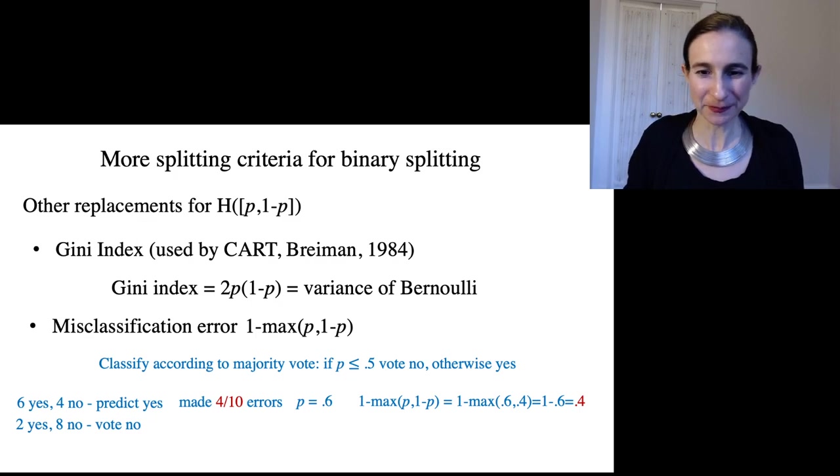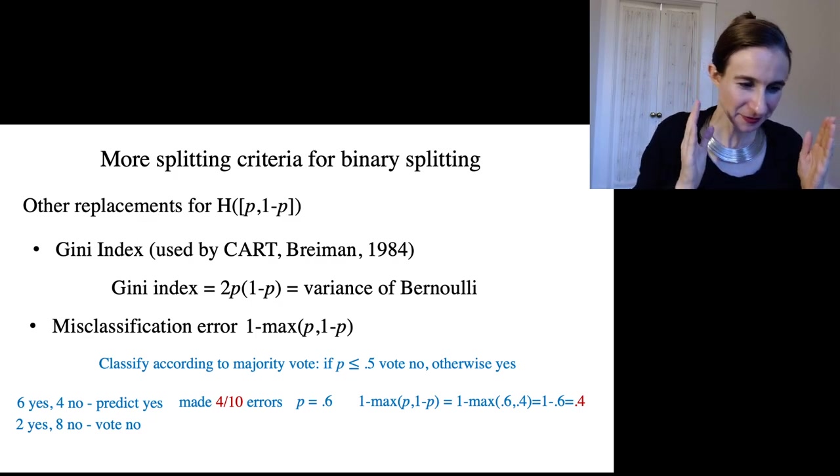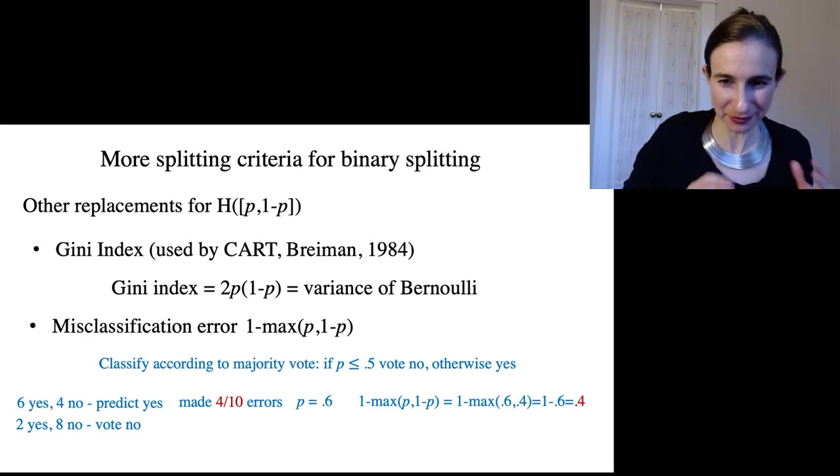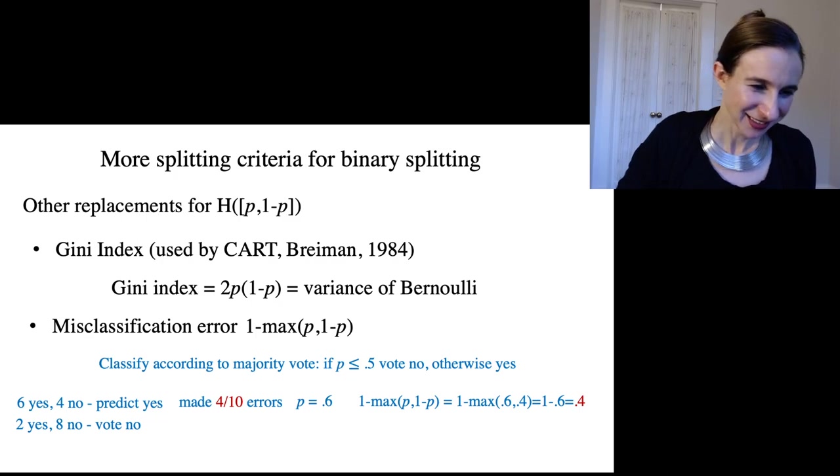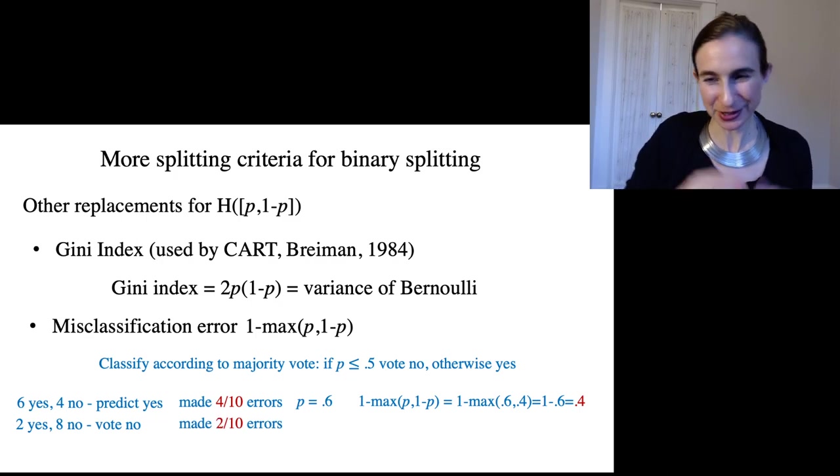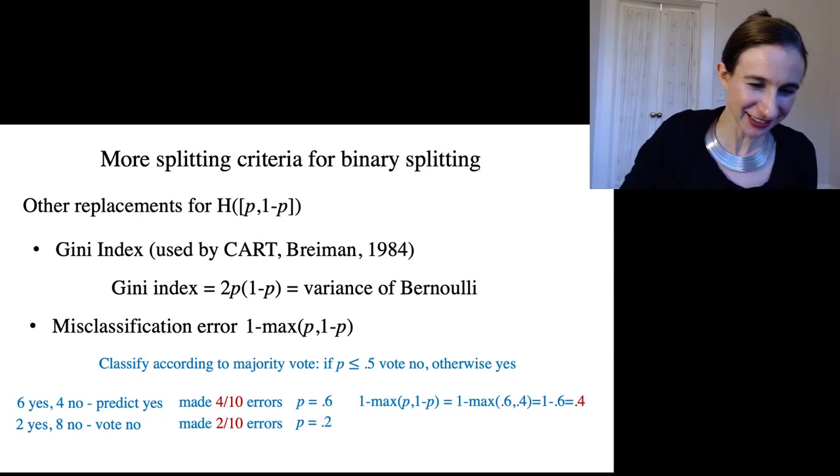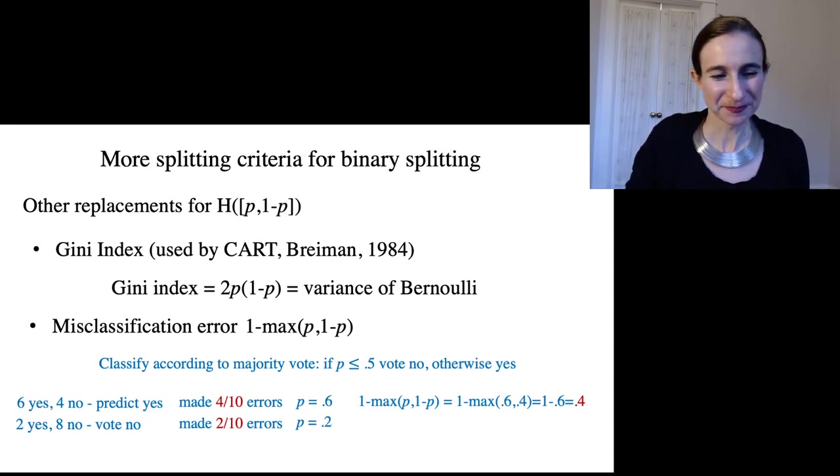Let's try another example. We have ten observations, two positive, eight negative. We vote no because we have more negatives than positives. We made two errors because there were two positives. We got them wrong. And our probability of error is 0.2.